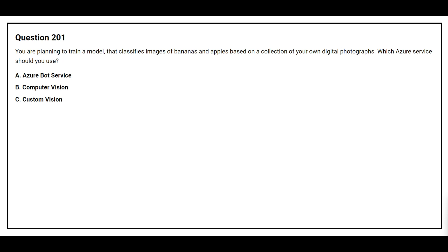Question 201: You are planning to train a model that classifies images of bananas and apples based on a collection of your own digital photographs. Which Azure service should you use? Option A: Azure Bot Service. Option B: Computer Vision. Option C: Custom Vision. The correct answer is Option C, Custom Vision.